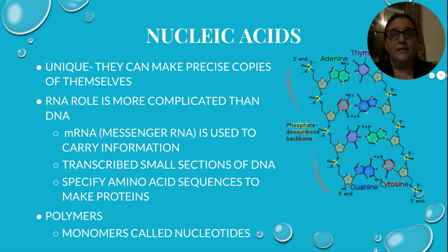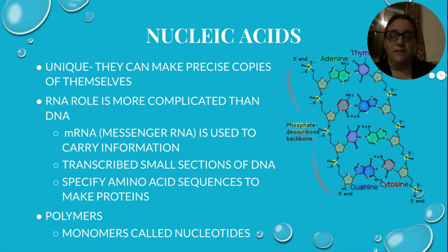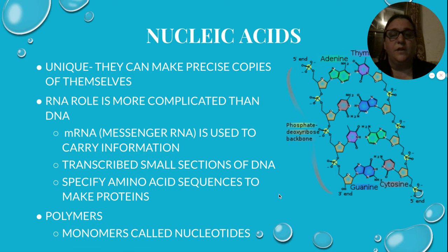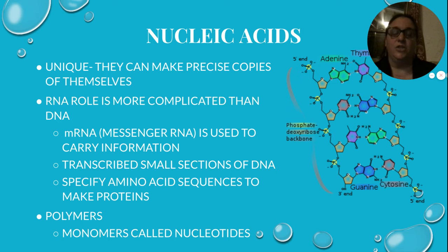mRNA will carry that code to the ribosomes, which make the proteins. Specific sequences of these things called amino acids will make up a protein, and we'll get to proteins tomorrow. So DNA and RNA are polymers because they're bigger structures, and their sub-pieces are called nucleotides — those are the monomers, the single structures. Just like a monosaccharide was the monomer of a polysaccharide, a many-sugar.